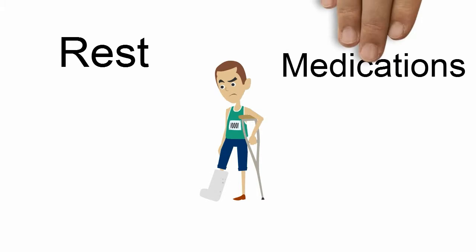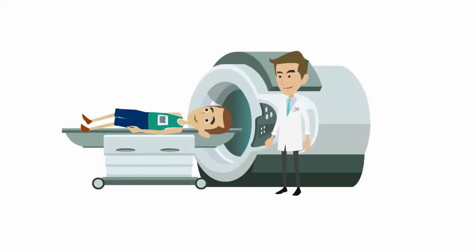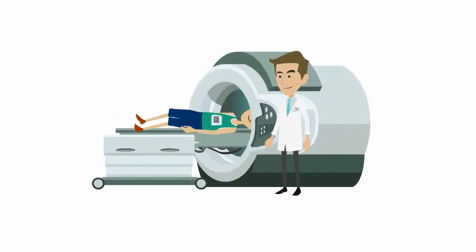John rested his ankle, took medication and did physical therapy for a few months but was still having pain and was unable to run. He went to his doctor who ordered an MRI which showed ligament and tendon damage.